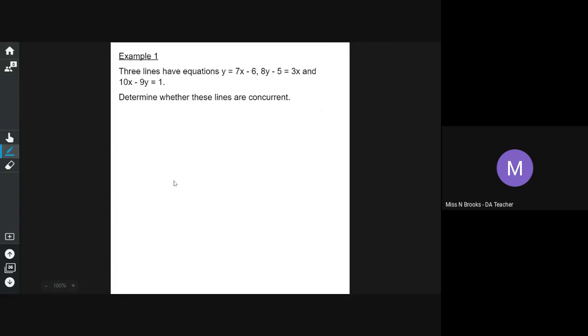Now it doesn't really matter which lines you use in order to work it out, but I'm going to use the first two lines and then substitute the point into the third line to check whether these lines are concurrent.